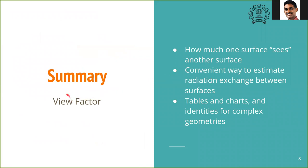To summarize, this was about view factor. View factor describes how much one surface sees another surface in terms of straight-line radiation that is emitted. It is a convenient way to estimate radiation exchange between surfaces. We will see more examples in tutorials. View factor for only very simple geometries can be obtained by inspection and by the summation and reciprocity rules; for complex geometries, we must use tables and charts.